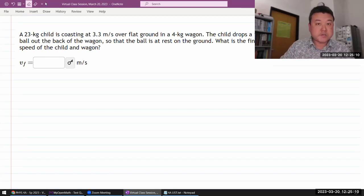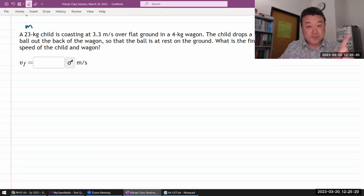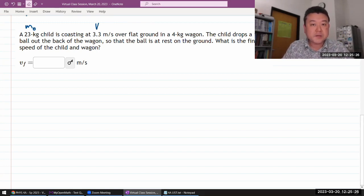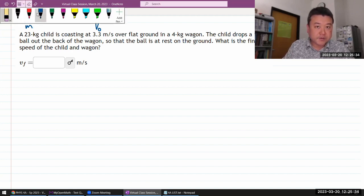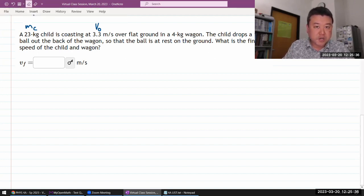Alright, so this question says some mass child is coasting at some speed over flat ground in a 4 kilogram wagon. Let me say M_child, and I think this is going to be a common speed so I can leave that alone. This is the mass of the wagon.